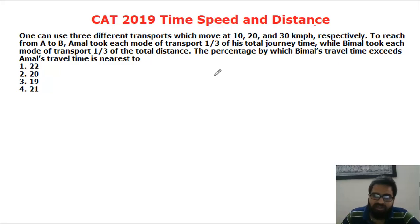Rather than going into finding harmonic mean for three numbers, what we can do is if you look at the question, Amal is travelling this distance with speeds of 10, 20 and 30 kilometers per hour equally according to time. So that is nothing but arithmetic mean.